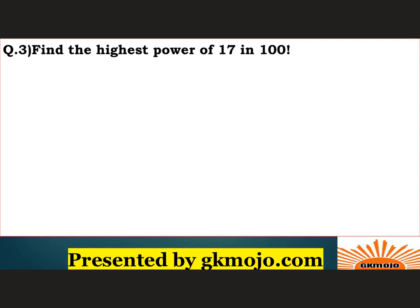Let's have a look at the next question. Similar to the questions that we have done before but a little different. Here they ask, find the highest power of 17 in 100 factorial. So again, take 100, divide by 17, quotient is 5, 17 times 5 is 85, quotient is 5, remainder is 15.